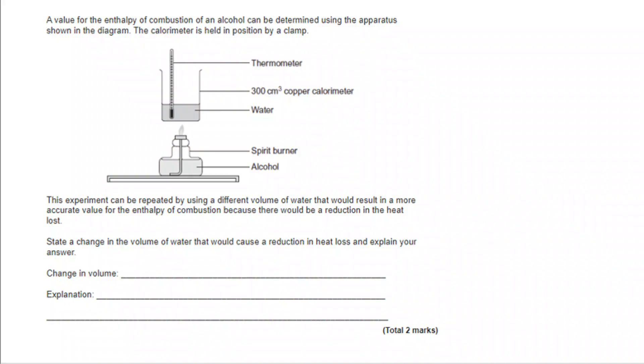State a change in the volume of water that would cause a reduction in heat loss and explain your answer. So, you've got to get the first mark to have access to the second because the explanation has to be for the correct change.